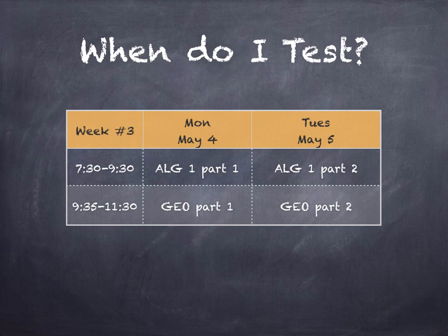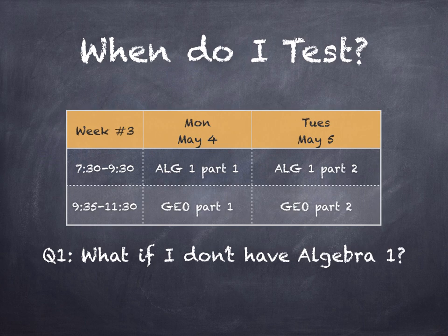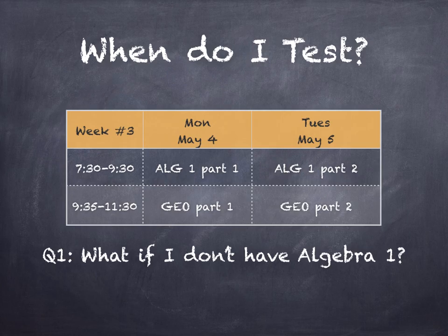During the third and final week of the super session testing, Monday May 4th and Tuesday May 5th, will be Algebra and Geometry. What if I don't have Algebra 1 — referring to regular Algebra 1 and Honors Algebra 1, not Algebra 1A? Then the same answers apply. If I don't have Algebra 1, I would sign up for an academic enrichment session or sign a permitted absence to not attend school at that time.